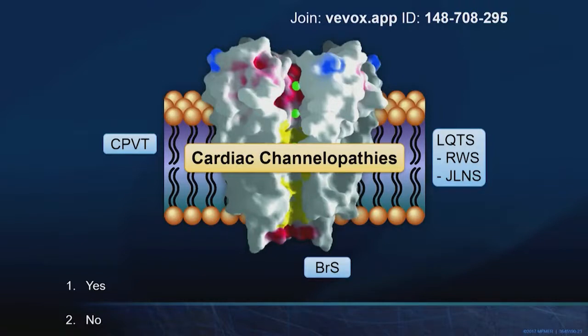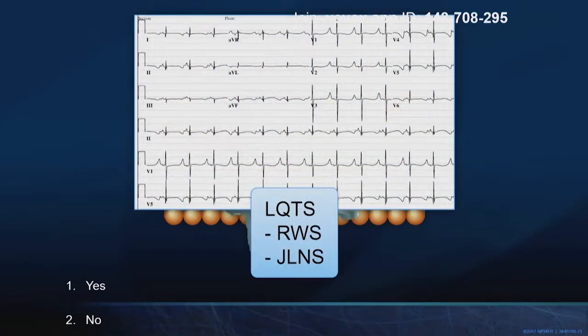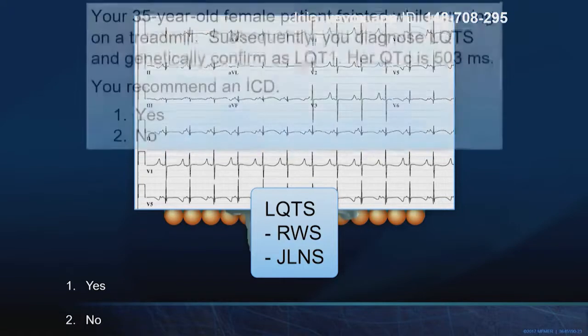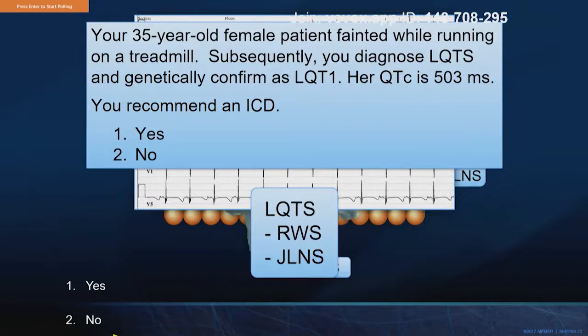Now we have 20 minutes to spend on the most common of the cardiac channelopathies — long QT syndrome — for which there tend to be more board questions. Here's a patient: no doubt about the electrocardiographic diagnosis of pretty impressive QT prolongation. She is 35, fainted while running on the treadmill. You picture rhythmic syncope from the circumstances, diagnose her as having long QT syndrome, suspect based on T-wave analysis that it's LQT1. The genetic test came back positive for LQT1. Her QTc at rest is 503 milliseconds. Will you be recommending an ICD — yes or no?